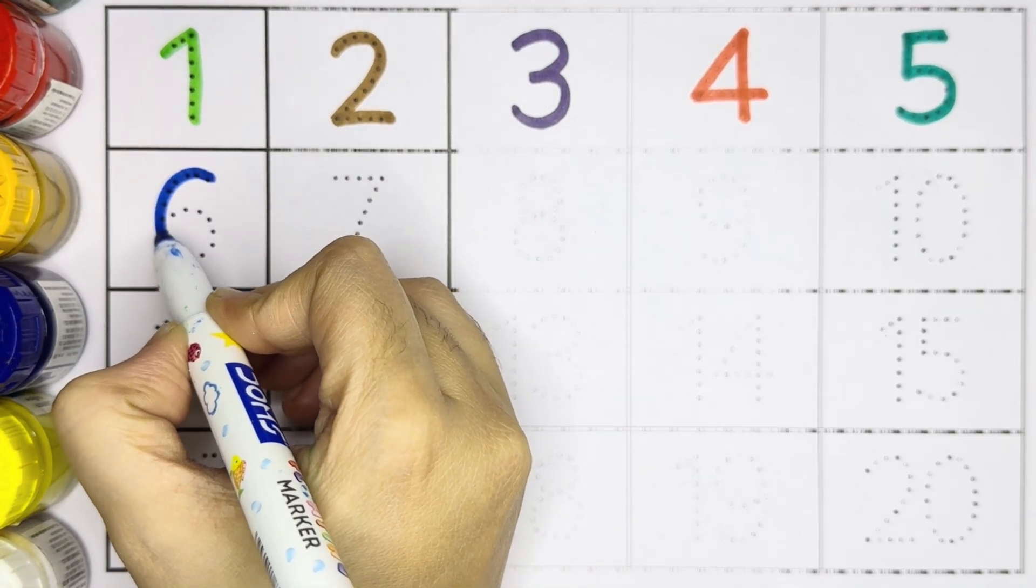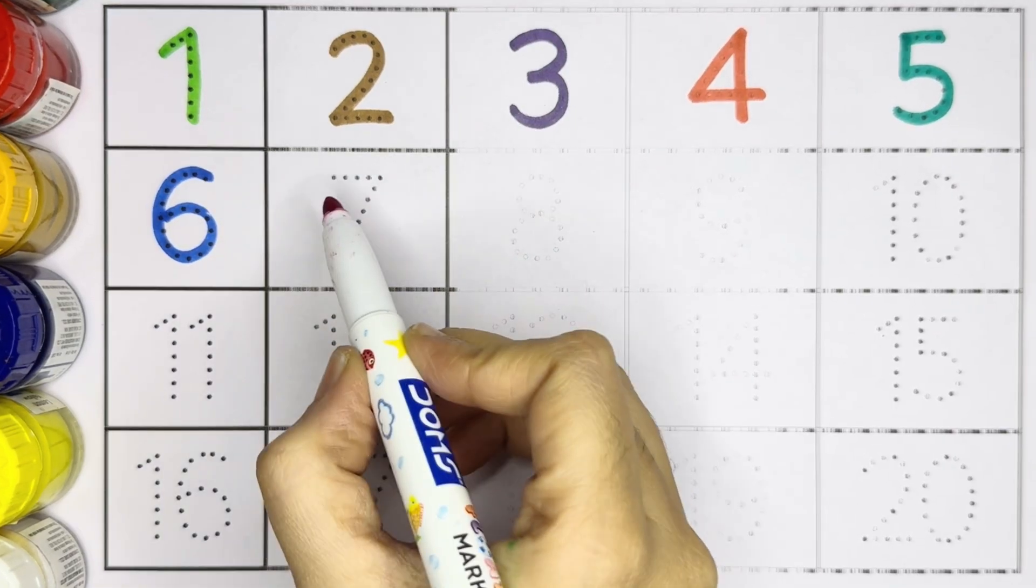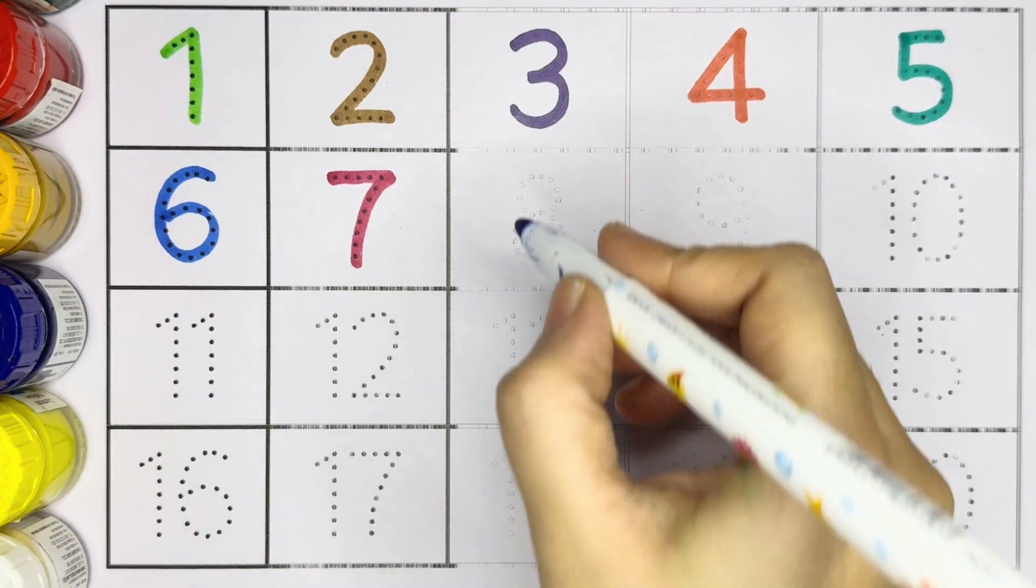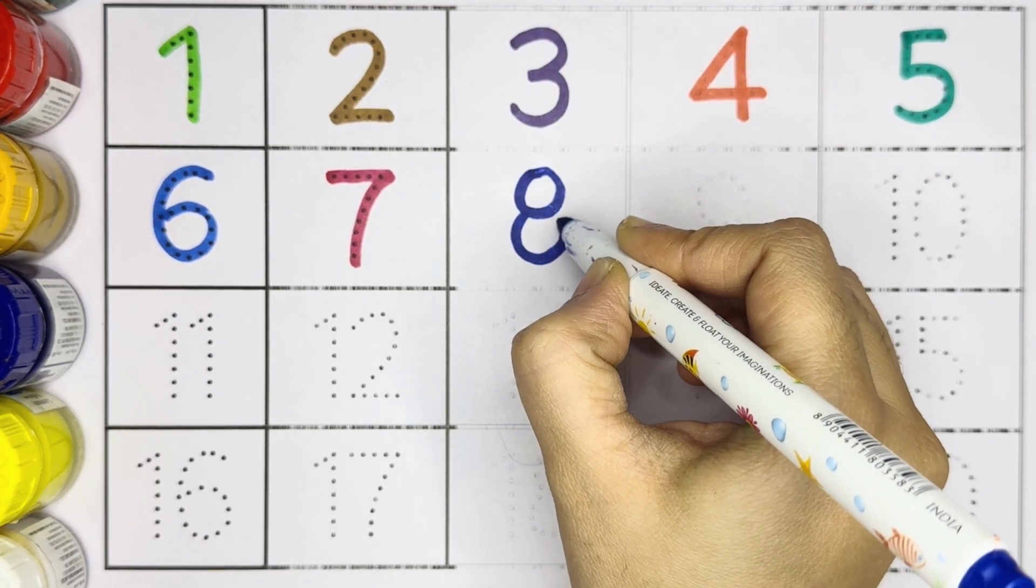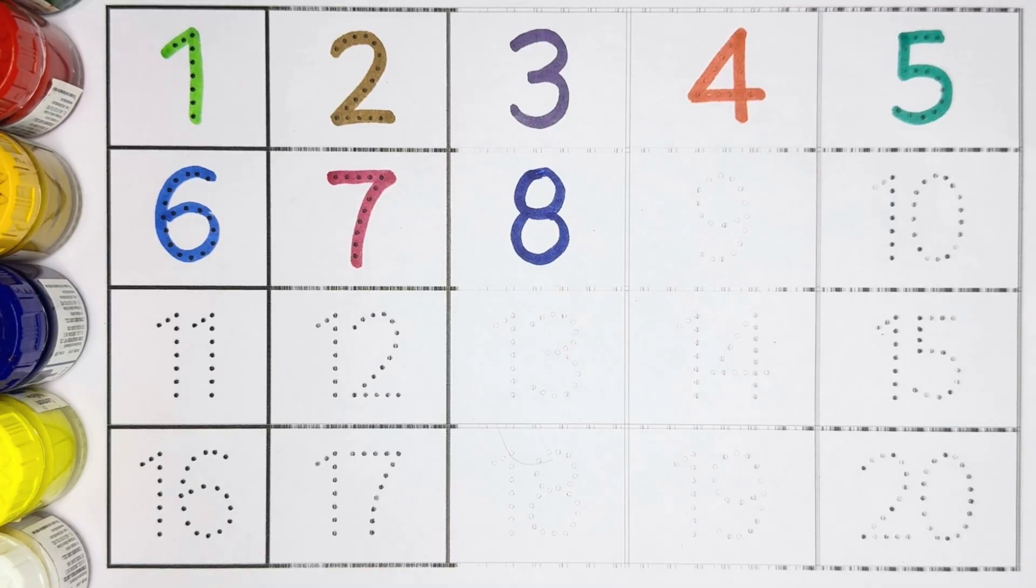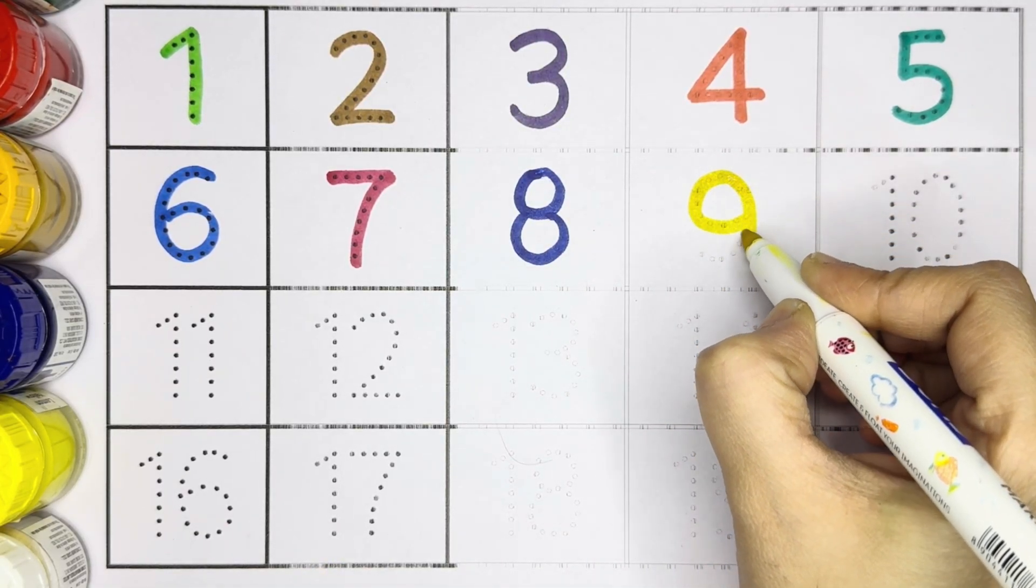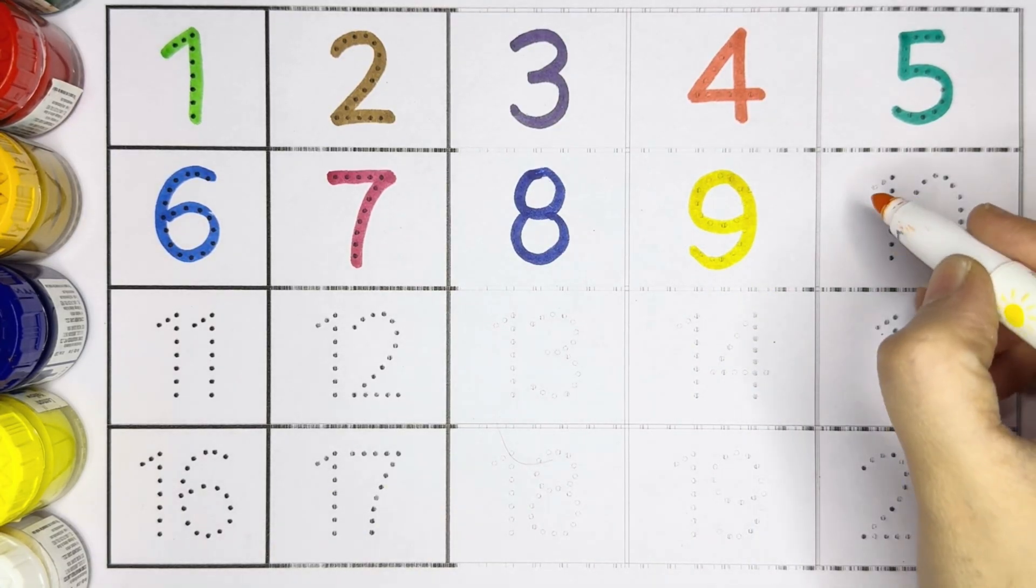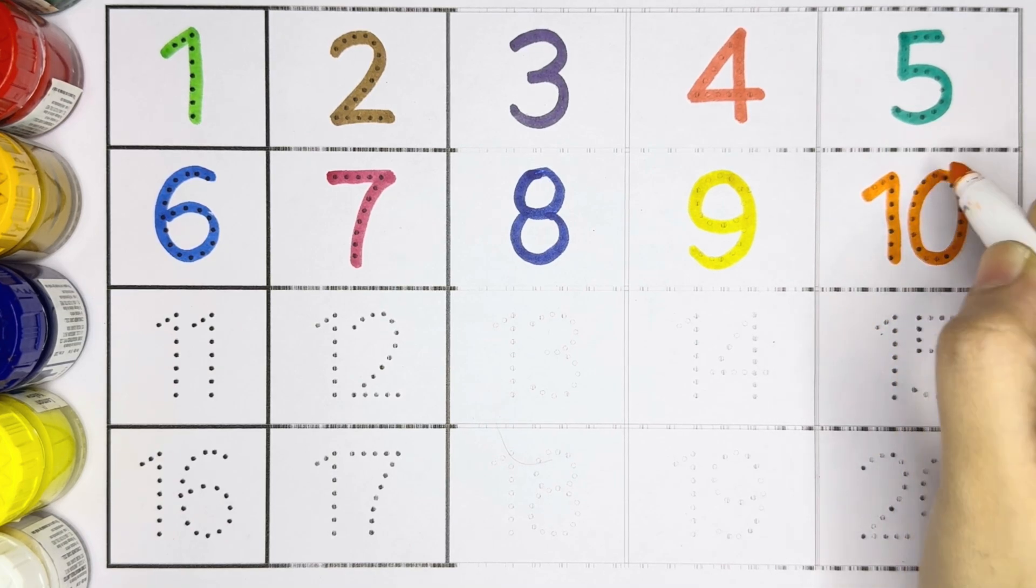Next is 6, number 6, blue color. 6, number 7, red color. Next is number 8, blue color. Number 9, yellow color. Number 9, 10, 1, 0, 10, orange color.